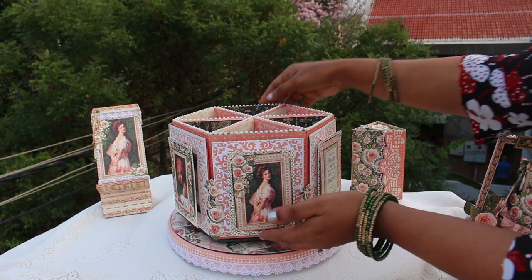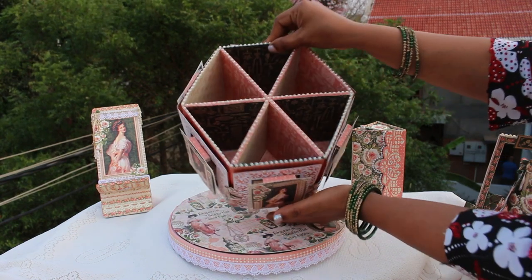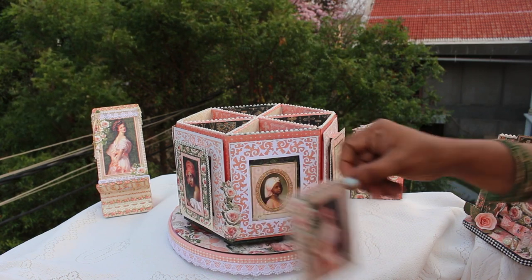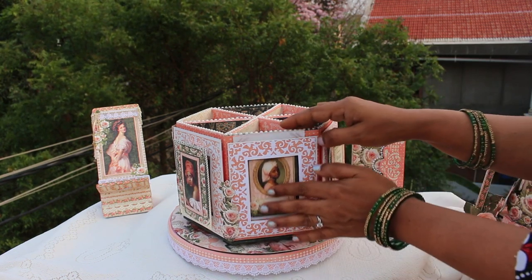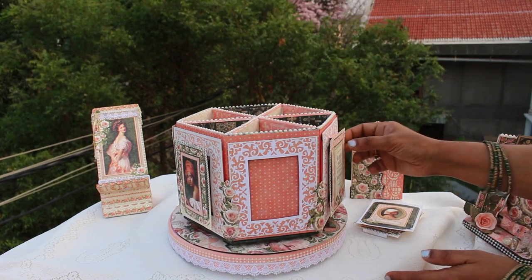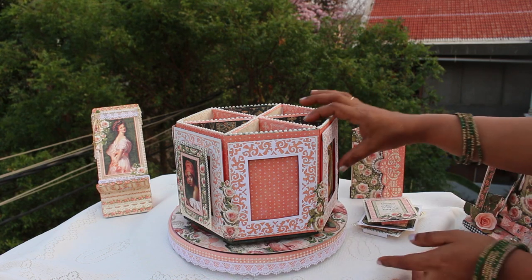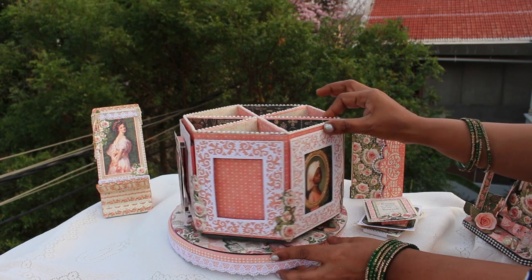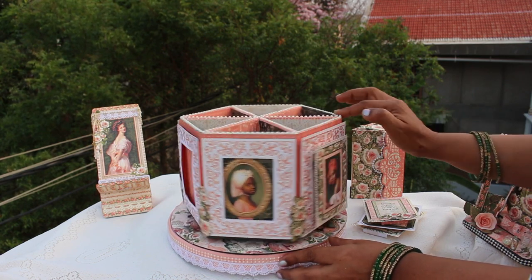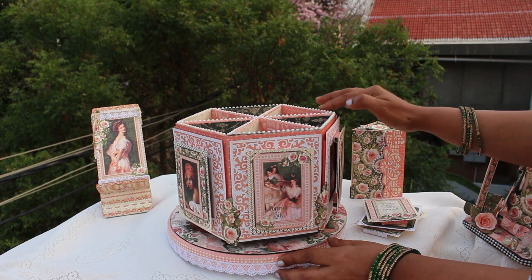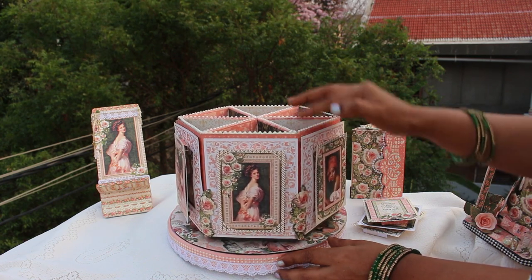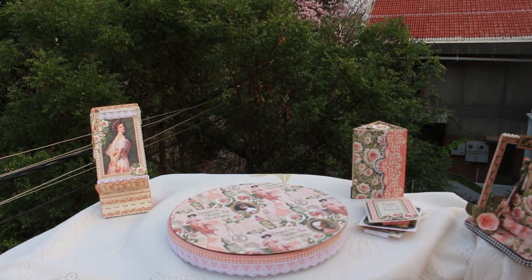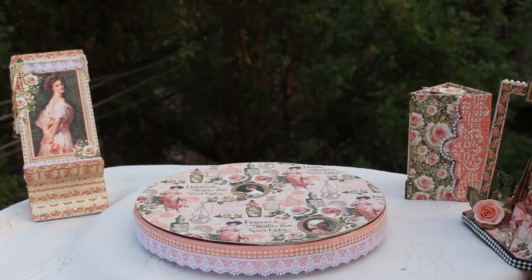So here I have removed the lid and that is the hexagonal box with the partitions. It is quite sturdy as it is made of chipboard. This is how you can remove the photographs. The box has a double rotating mechanism. So this is the second rotating mechanism. This is based on a skewer and a CD mechanism which I will show you later in this tutorial.